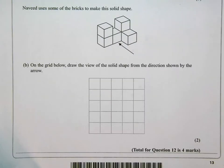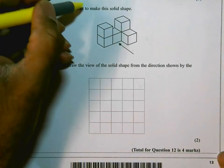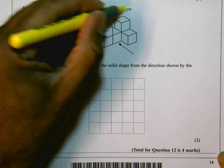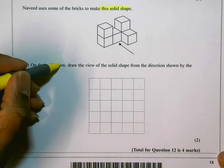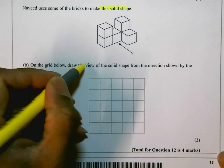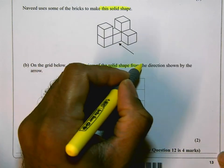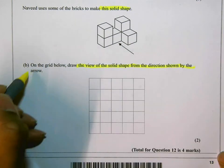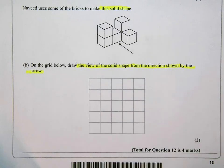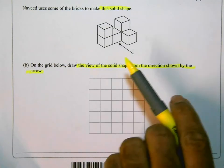Okay, this is part B. Part B is sort of moving on. It says Navid uses some of the bricks to make this solid shape. On the grid below, draw the view of the solid shape from the direction shown by the arrow. So they want to know what shape you would see if you were looking at it from this direction, the direction shown by the arrow.